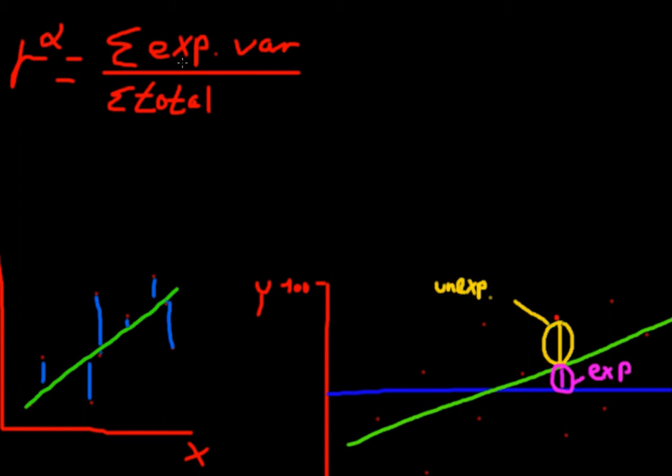Imagine R squared is equal to 0.61. What does that tell you? It says that 61% of the variation is explained by the regression, and 39% is left unexplained. I would argue that 61% is pretty good. R squared is very important if you want to know whether you have a good model or not.